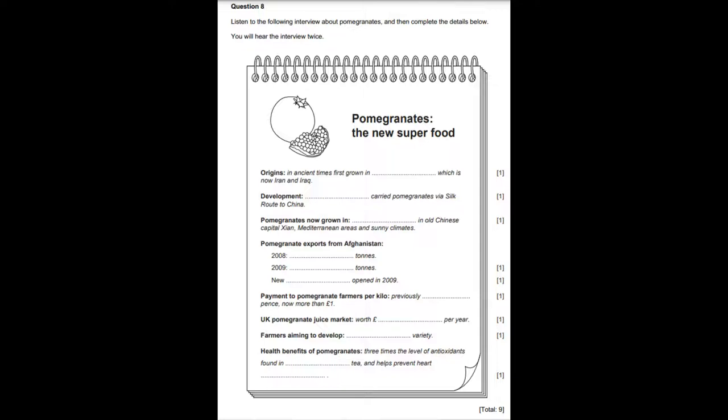Pomegranates are prized for their wonderful health-giving properties. The juice is meant to help prevent heart disease. Scientists have found that pomegranate juice is high in antioxidants, which protect the body from bad chemicals in the blood. It is thought that pomegranate juice may contain three times the amount of antioxidants found in green tea — that makes pomegranates the new superfood.